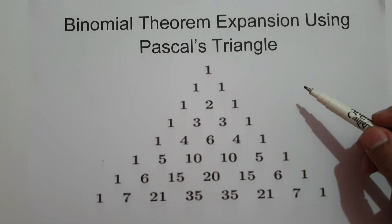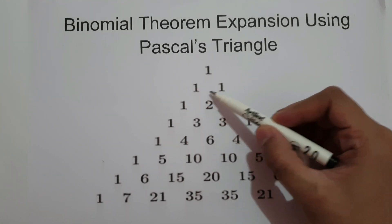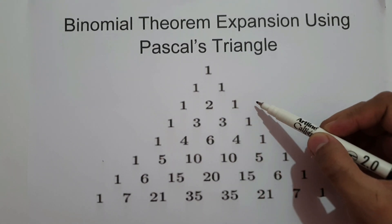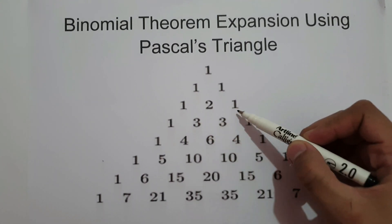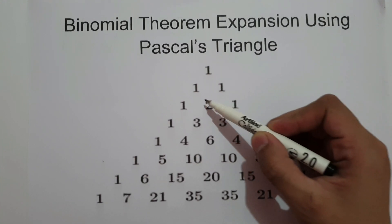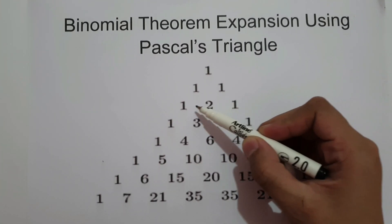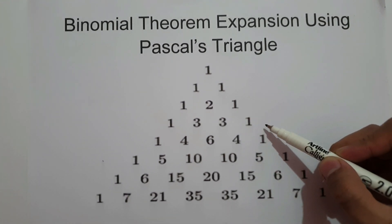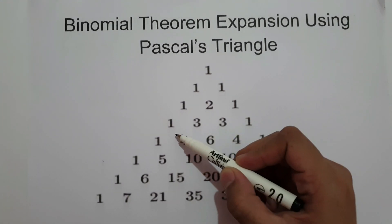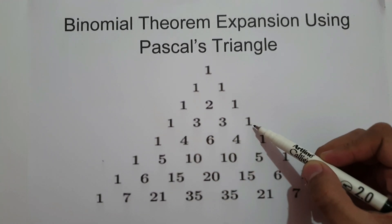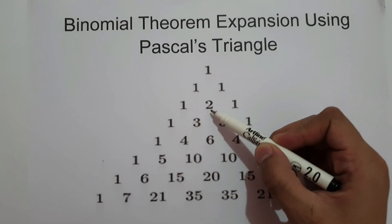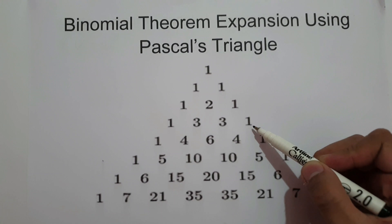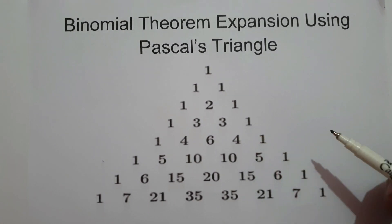The first row consists of coefficients 1 and 1. The second row consists of 1, 2, and 1 as the coefficients — obtained by 1 plus 1, that is 2 — and then we write 1 on both sides. The third row consists of 1, 3, 3, and 1, obtained by 1 plus 2 is 3, and 2 plus 1 is 3, and we write 1 on both sides.